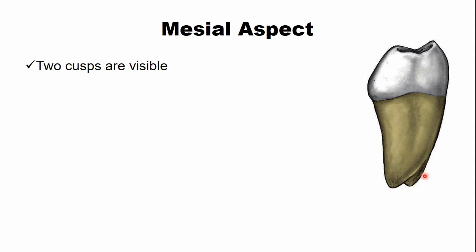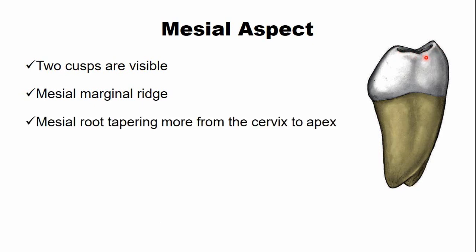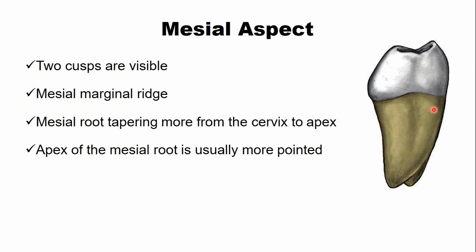From the mesial aspect of the mandibular third molar, only two cusps are visible: the mesiobuccal and mesiolingual cusps, connected by the mesial marginal ridge. The mesial root tapers more towards the cervical area and root apex compared to the first and second molars, and the apex of the mesial root is more pointed as well.